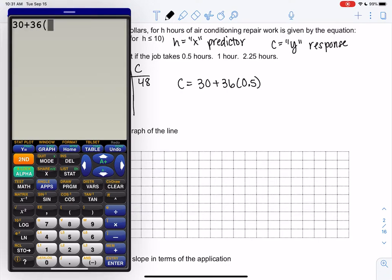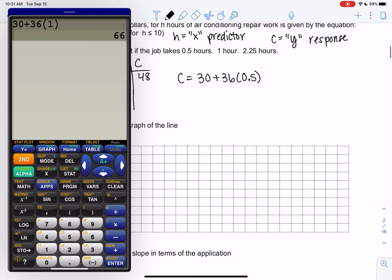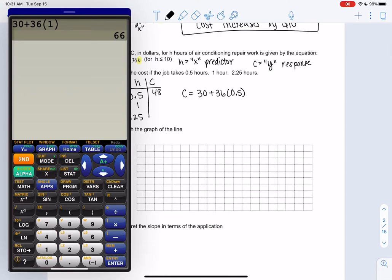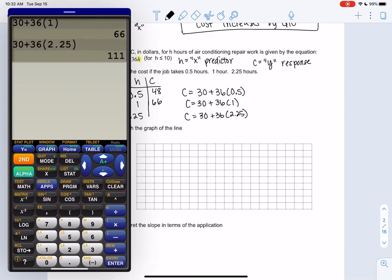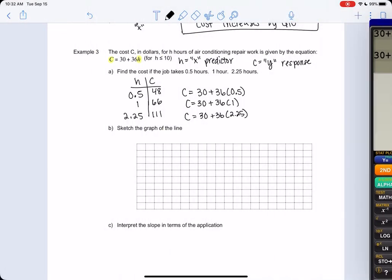So again, type everything at once. So 30 for one hour, we get $66. So I'm just replacing the h and then we'll do it one more time and we'll plug in 2.25 hours. If you do second enter, you can just type back over and we get $111. So we input hours, we output cost.